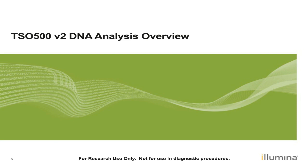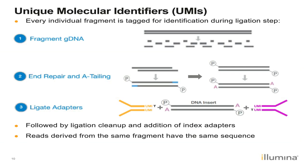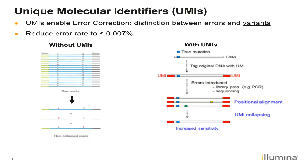We're now going to give an overview of the DNA analysis pipeline. One of the important parts of the TSO500 DNA analysis pipeline is the use of UMIs — unique molecular identifiers. This is important for allowing us to get to very low variant allele frequencies and high levels of specificity and sensitivity. We first fragment our DNA, and at the fragmentation step we add UMI adapters. UMIs are unique molecular barcodes that are unique to each fragment, so reads derived from the same fragment have the same sequence at the ends of each insert. This enables a high degree of error correction, giving us a distinction between errors and true variants.